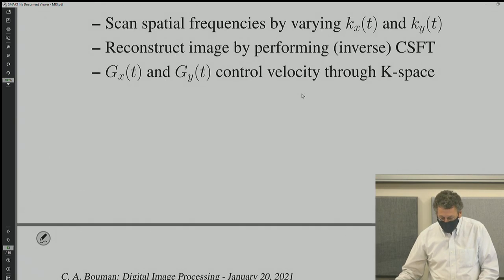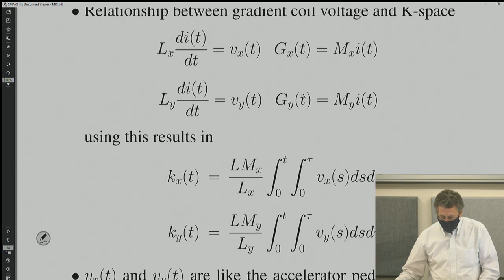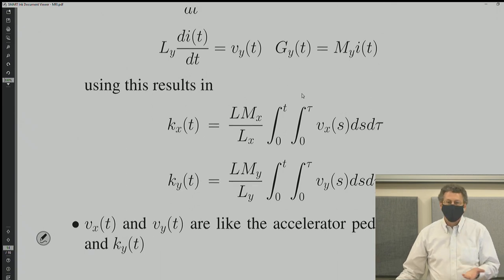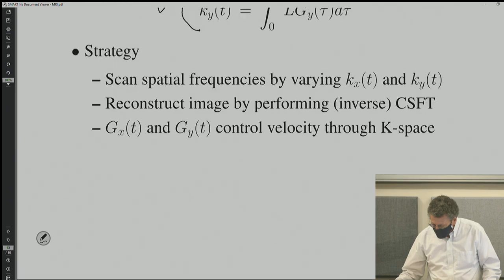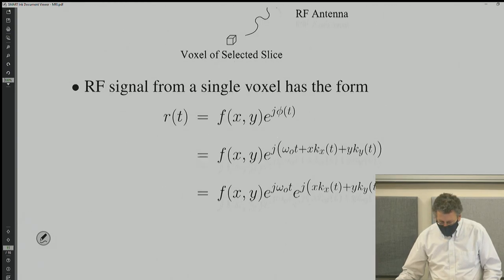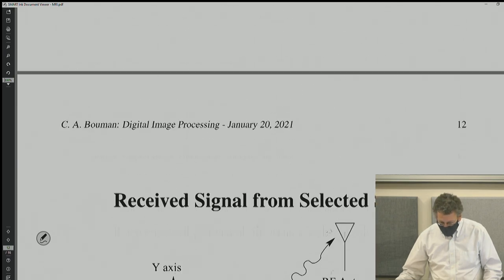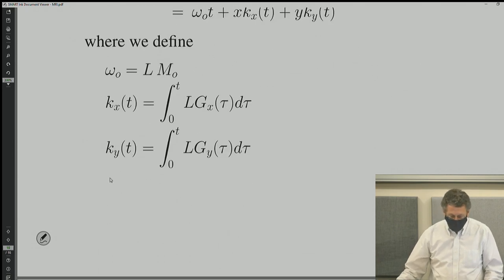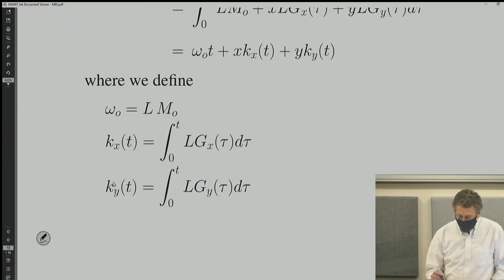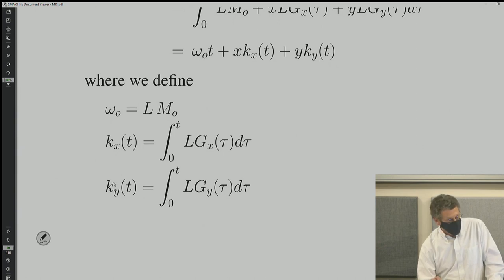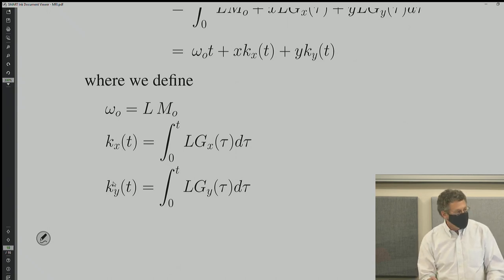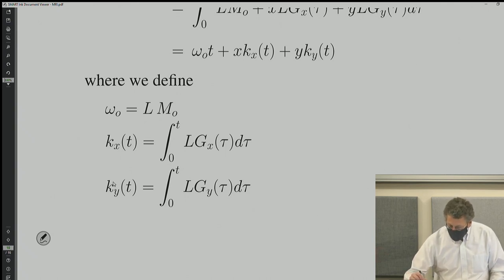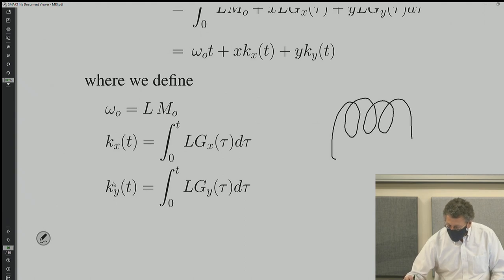Let's go back and look at what kx and ky were. Here are the actual formulas for kx and ky. So g is the gradient — it's the strength of the gradient. gx determines the amount of slope or gradient in the x direction, and gy is the slope or gradient in the y direction. Those will be controlled as a function of time. The way they're controlled is that there's going to be a coil with a current source, and the current will be proportional to gx.